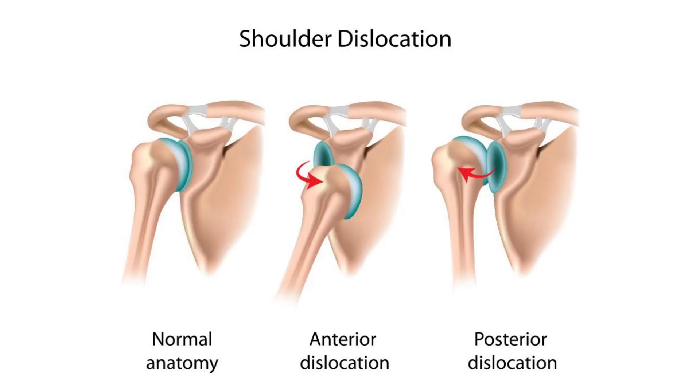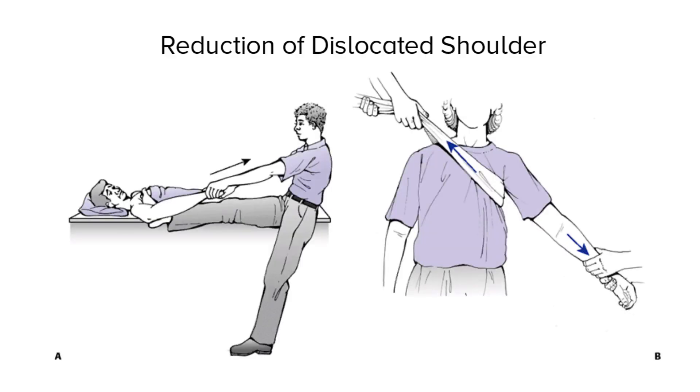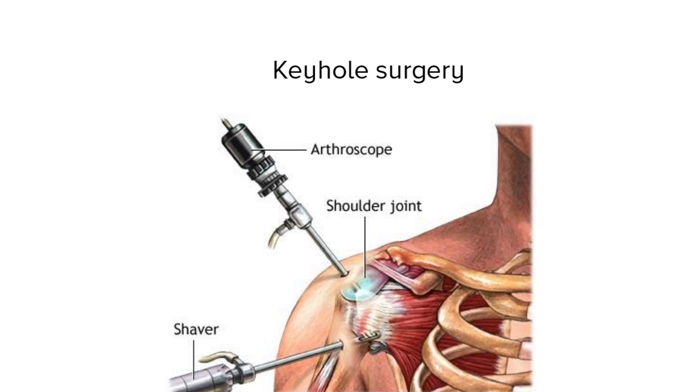Shoulder dislocation is a painful condition where the patient's shoulder comes out of the socket. It needs to be brought back into the socket after putting the patient under anesthesia so that the process becomes less painful and less traumatic. Sometimes shoulder dislocations are reduced in the field, but this can lead to injury of the surrounding bone and ligaments. Patients with frequent or repeated dislocations of the shoulder joint need a surgery called arthroscopy or keyhole surgery, where the torn ligament — the culprit for frequent dislocation — is repaired back in its position so that the patient will have a stable shoulder.